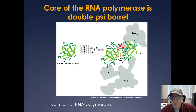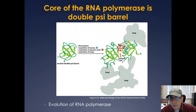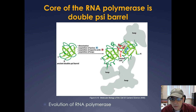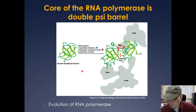Here's the core of the RNA polymerase. It turns out the structure is a double-sided barrel — here's an ancient double-sided barrel as an analogy — and some of the amino acids in the active site were changed to aspartic acids and lysines. There's also a central magnesium present.